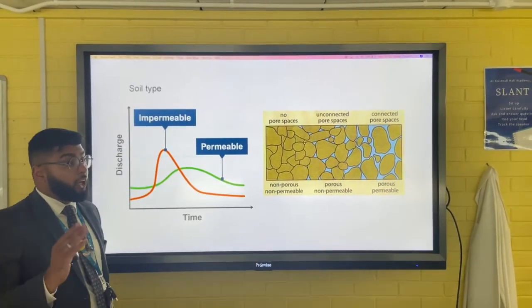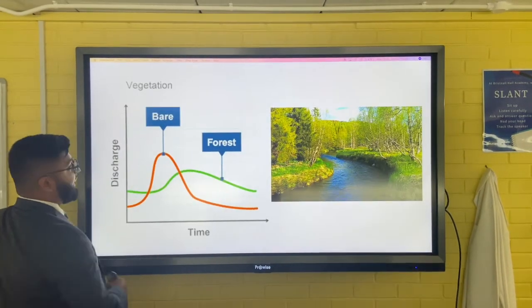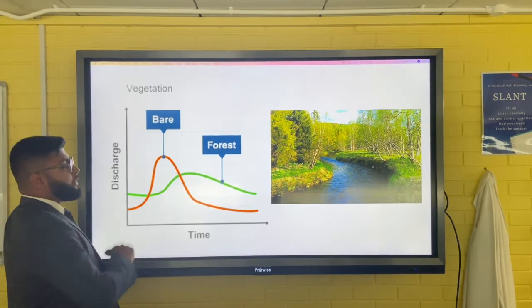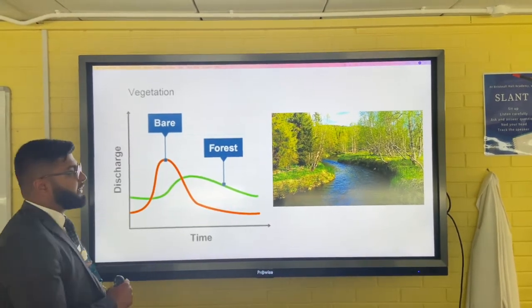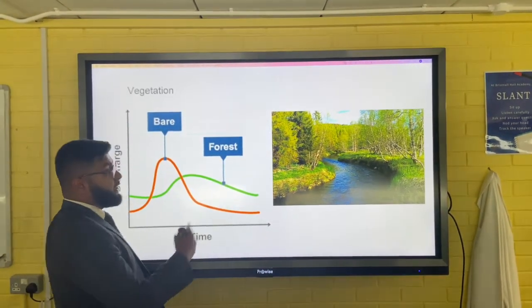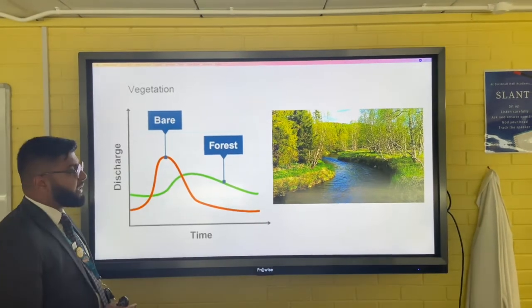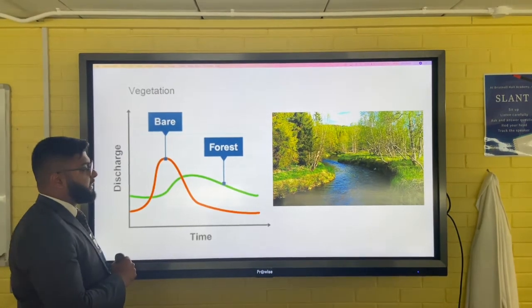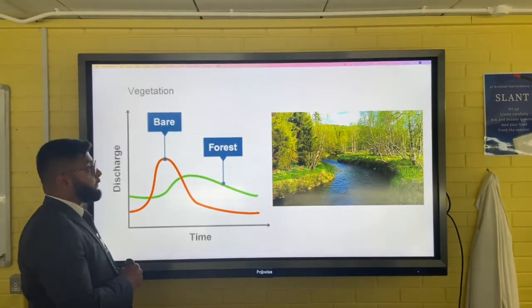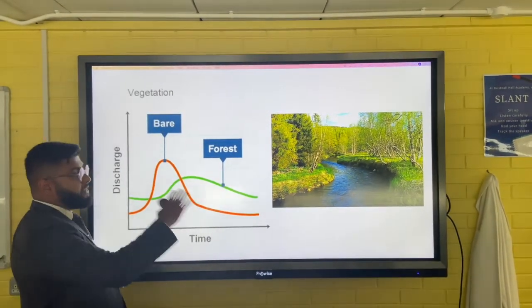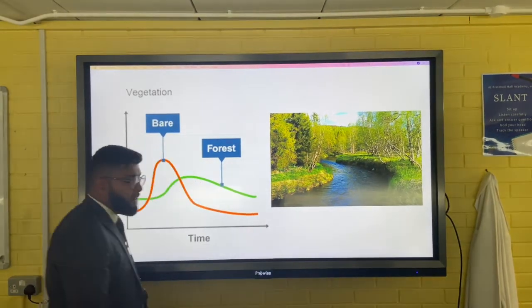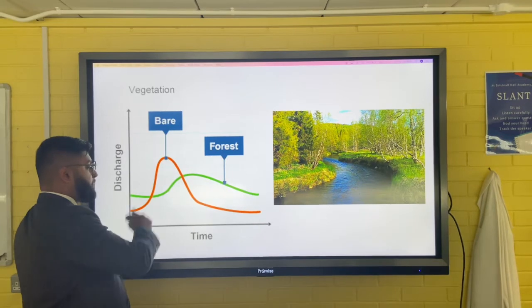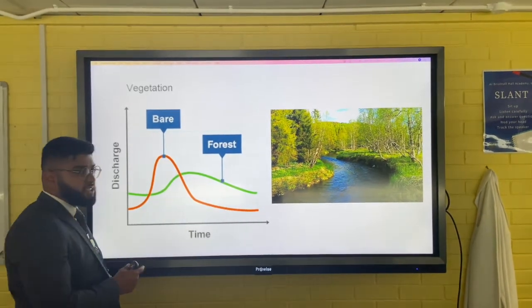Vegetation: when we're thinking about vegetation in a forest, increased interception by the vegetation around the river is slowing down the water getting into the river and becoming discharged, so the falling limb is quite gentle and also the rising limb as well. If deforestation was to occur though, that interception would not happen, so the bare land, the deforested land, would have a steep rising and falling limb and also a very short lag time.